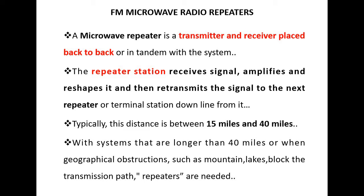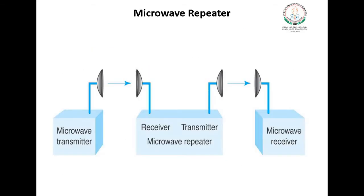A microwave repeater is a transmitter and receiver placed back to back within the system. The repeater station receives signals, amplifies and reshapes them, and then retransmits the signal to the next repeater or terminal station. This is the block diagram for a microwave repeater — you can see repeaters placed in between the microwave transmitter and receiver.